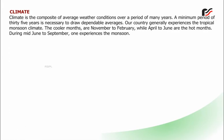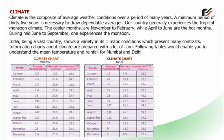Climate is the composite of average weather conditions over a period of many years. A minimum period of 35 years is necessary to draw dependable averages. Our country generally experiences the tropical monsoon climate. The cooler months are November to February, while April to June are the hot months. During mid-June to September, one experiences the monsoon. India, being a vast country, shows a variety in its climatic conditions. Following tables enable you to understand the mean temperature and rainfall for Mumbai and Delhi.